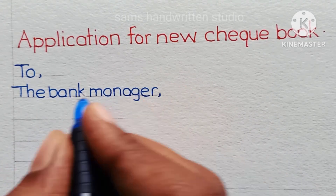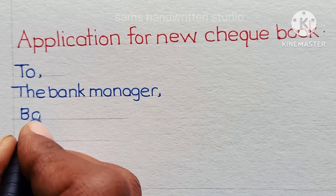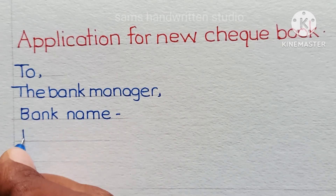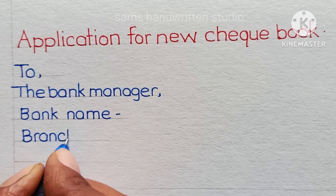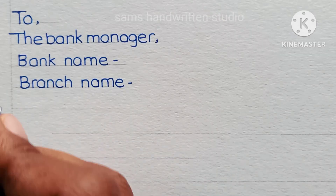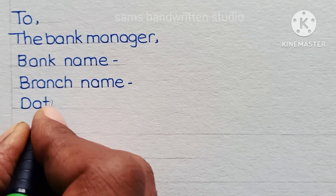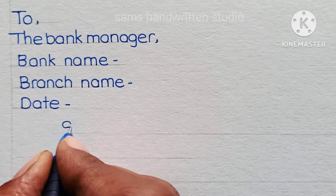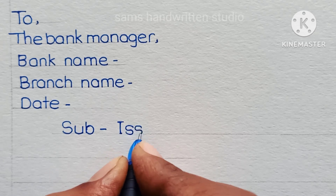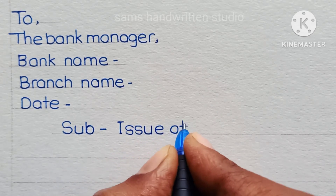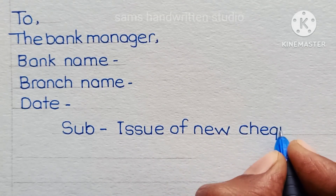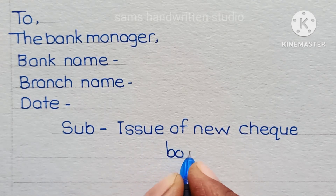Address the letter to the bank manager. Write the bank name and branch name, followed by the date. Then write the subject: 'Issue a new checkbook.'